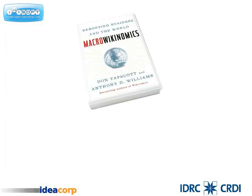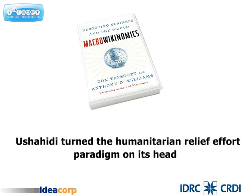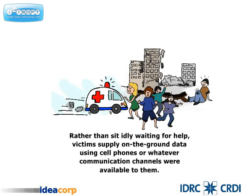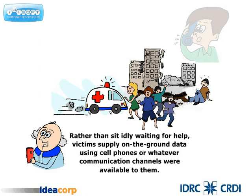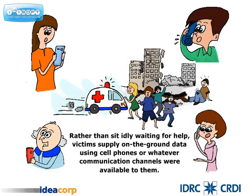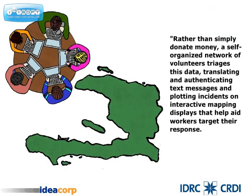In their book Macroeconomics, Don Tapscott and Anthony D. Williams argued that Ushahidi turned the humanitarian relief effort paradigm on its head. Rather than sit idly waiting for help, victims supply on-the-ground data using cell phones or whatever communication channels were available to them. Rather than simply donate money, a self-organized network of volunteers triages this data, translating and authenticating text messages, and plotting incidents on interactive mapping displays that help aid workers target their response.